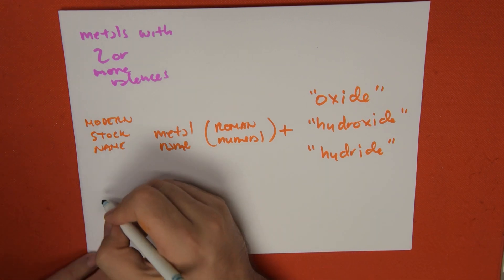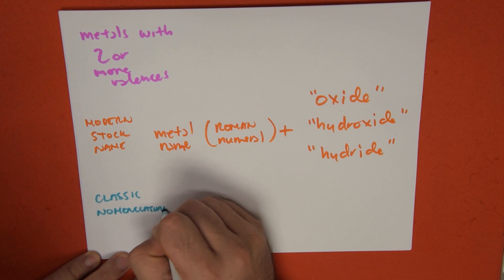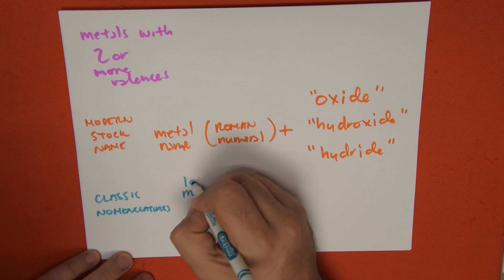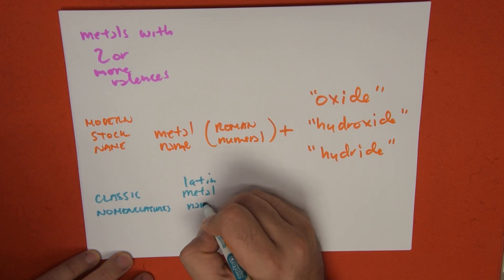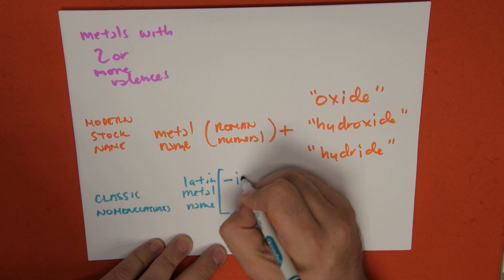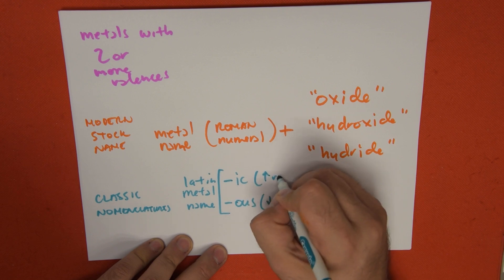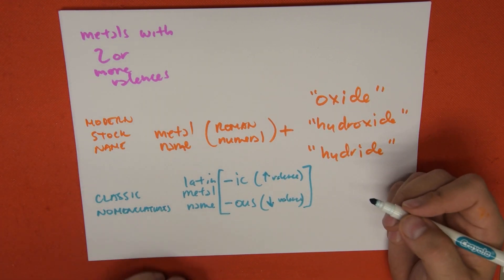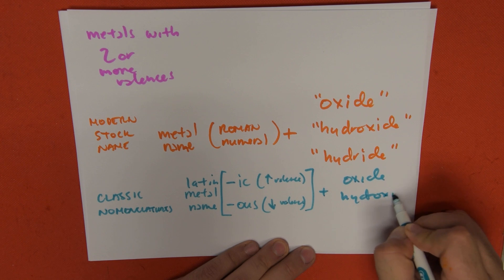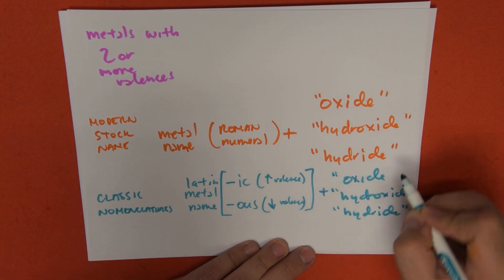When we speak about classic nomenclature, we use the Latin metal name with an -ous ending for the lower valence, or an -ic ending for the higher valence. After we add this, we don't need a Roman numeral, and we add the word oxide, hydroxide, or hydride.